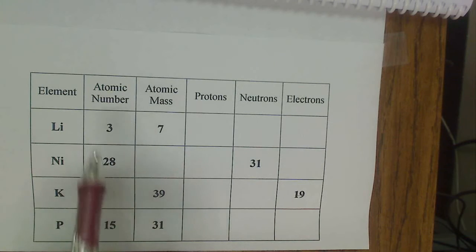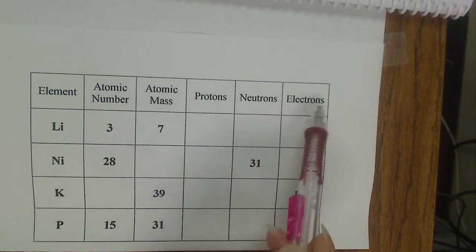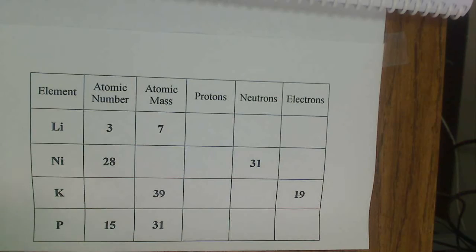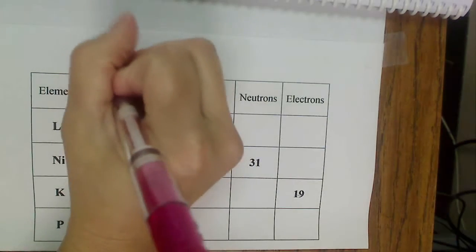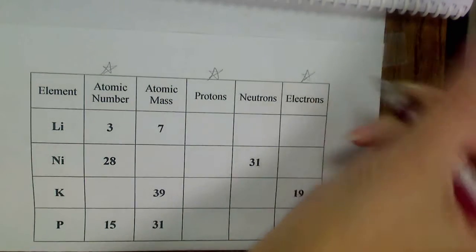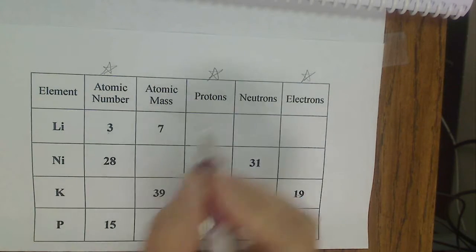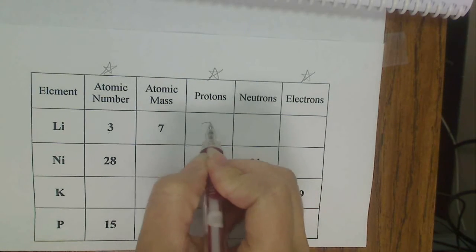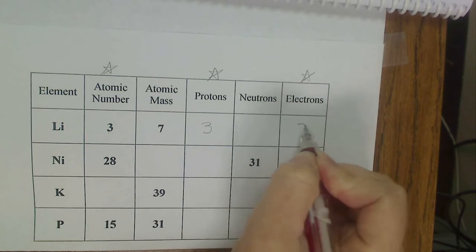For instance, I know that my atomic number, my protons, and my electrons are all the same. So I'm going to put a star right here to remind me that these all should equal. So if my atomic number is 3, then I know my protons is also 3, and my electrons is also 3.